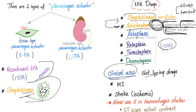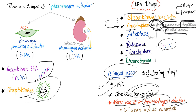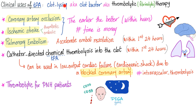The clinical use of TPA: these drugs are called clot-lysing drugs, clot busters, thrombolytics, or fibrinolytics. Uses include myocardial infarction, stroke — especially ischemic stroke. Never use TPA in hemorrhagic strokes, only in ischemic strokes. To differentiate between ischemic and hemorrhagic stroke, order a CT scan of the head without contrast.